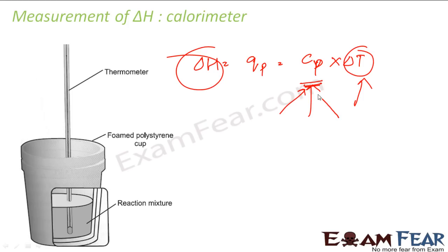How we will know? Scientists have done these experiments and they have given away Cp value for most of the substances we will be used in a laboratory. So we can get the Cp value. Then we can find delta H.